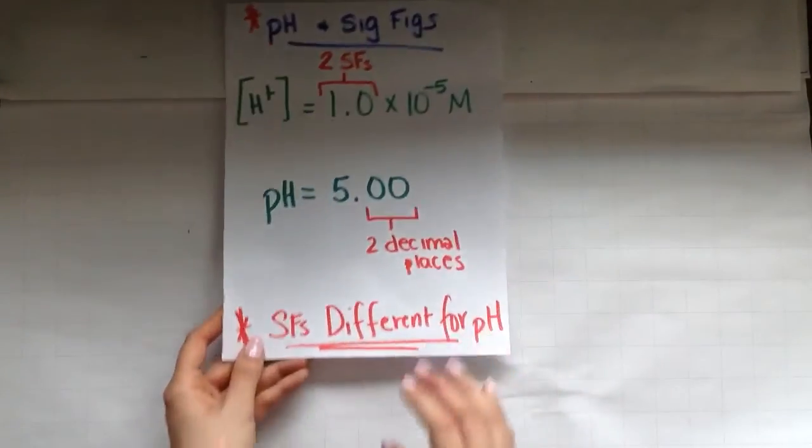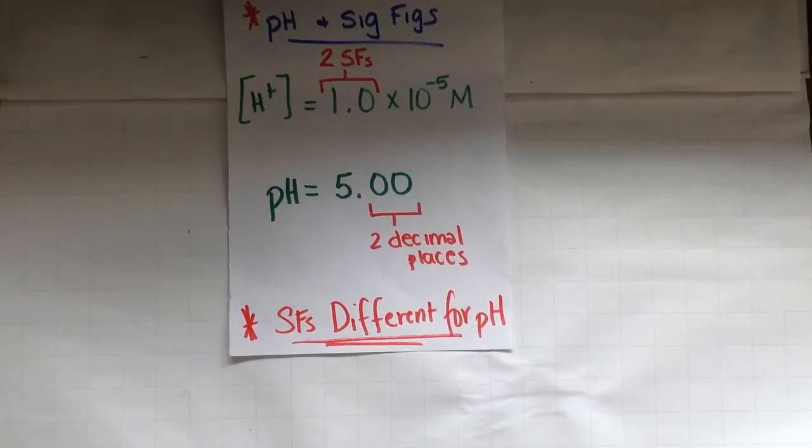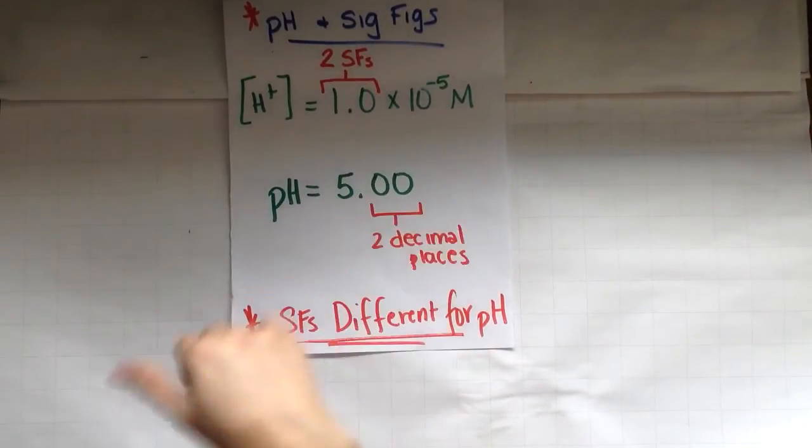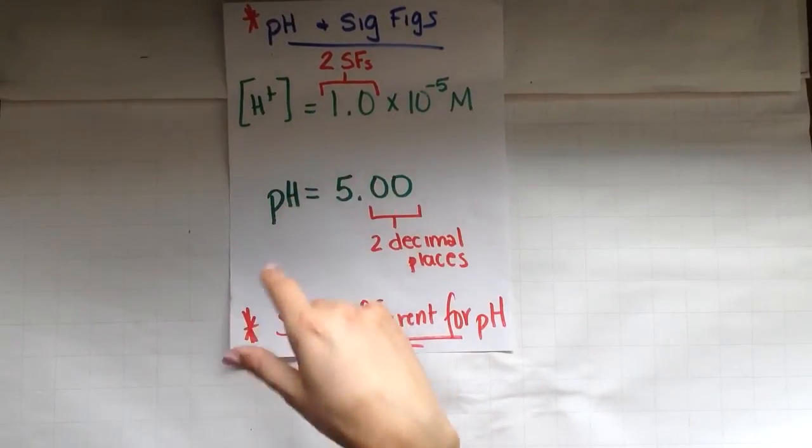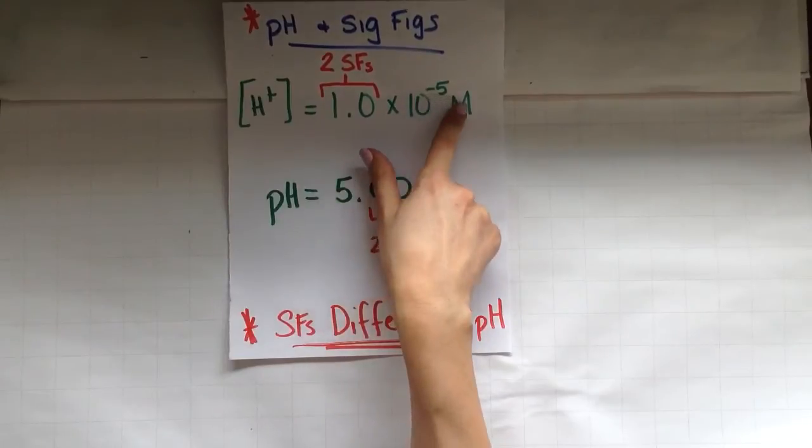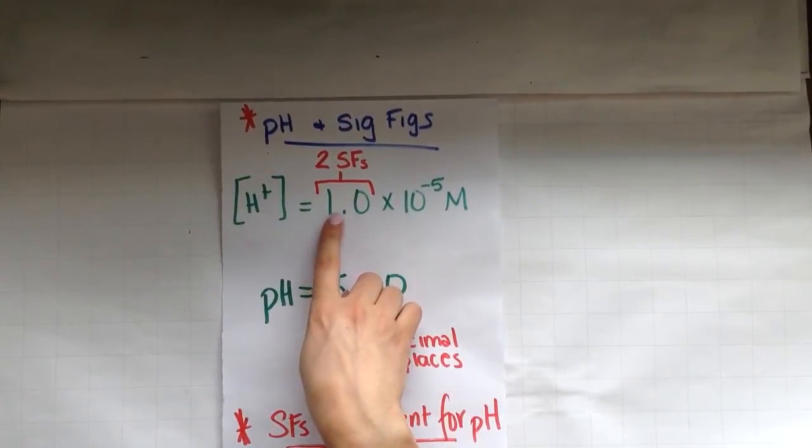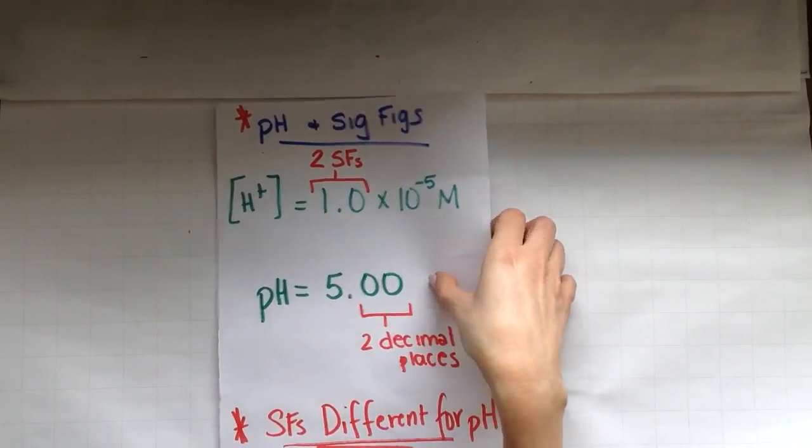Sig figs for pH is a bit unique. They do not follow normal rules for sig figs. So again, sig figs are different for pH. So if we look here, we just got an answer of 1.0 times 10 to the negative fifth. I'm sorry, we just got an answer of 5.00. How do we do sig figs on that? Well, our given was 1.0 times 10 to the negative fifth. And if you notice, there were two sig figs in our given. One, two. Trailing zeros are significant if there's a decimal somewhere present in the number.